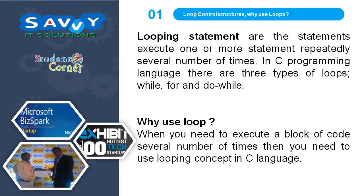Looping statements are used to execute one or more statements repeatedly several number of times. In C programming language, there are three types of loops: while, for, and do-while. Why use a loop? When you need to execute a block of code several number of times, then you need to use the looping concept in C language.